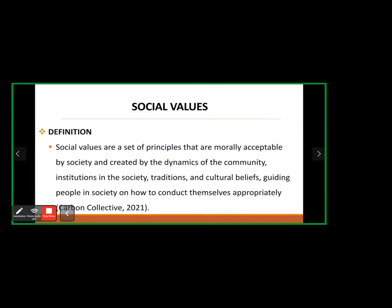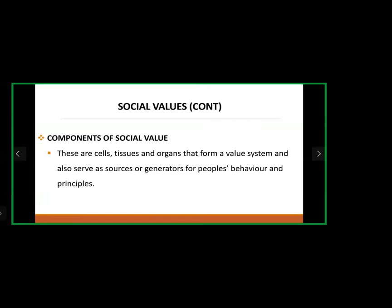Social values are a set of principles morally accepted in society; people use them as a guide on how to behave or conduct themselves properly. The components of social values are like cells to an organ — they form a value system and serve as sources or generators for people's behavior and principles, like a value bank from which we make reference about how we behave.